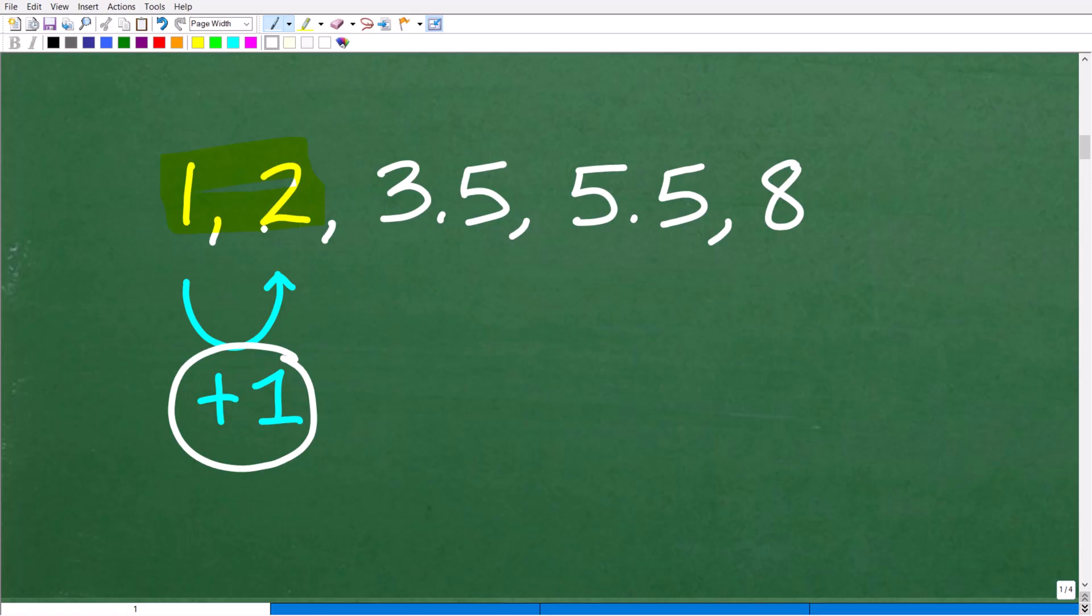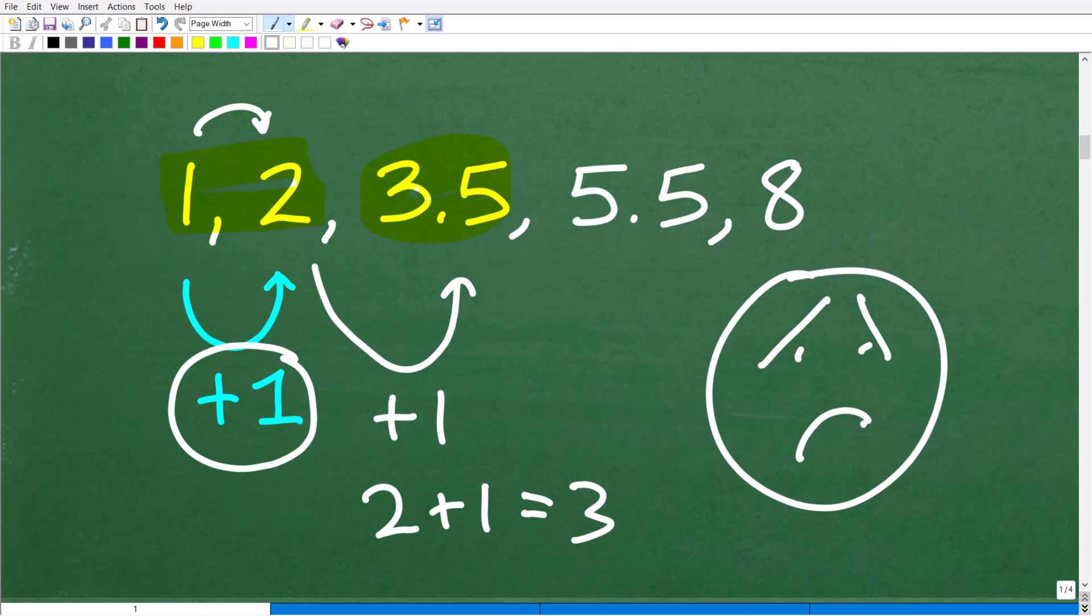So if adding one to the previous term or the number in this pattern to get to the next number, if that's the rule, let's go ahead and test that. So we'll take this two, and we'll add one. And what happens? Two plus one is obviously three. And the next term here, the next number in this pattern is 3.5. So that doesn't look like that is going to work. So unfortunately, we're going to have to continue to look. And a lot of you might be saying, come on, Mr. YouTube math man, don't make this problem so hard.